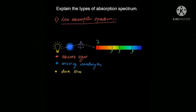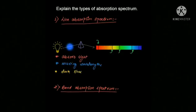The second type of absorption spectrum is the band absorption spectrum. If instead of atoms, light is absorbed by gas molecules, the missing wavelengths are grouped together into bunches. So instead of dark lines, we get dark bands on a bright background. These dark bands are called the band absorption spectrum.